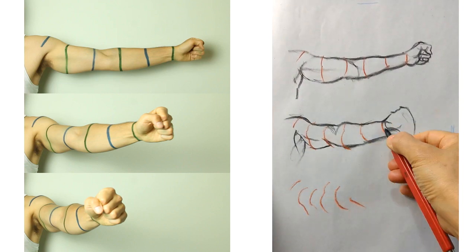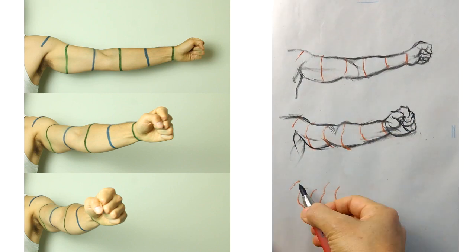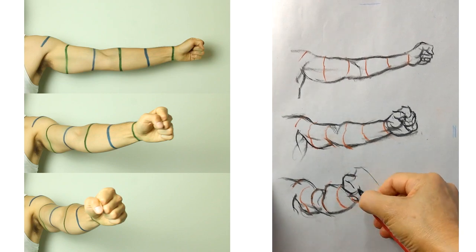In this video we're going to look at ways of practicing foreshortening so that you can conquer it once and for all. Hi, my name is Kenzo and this is Love Life Drawing.